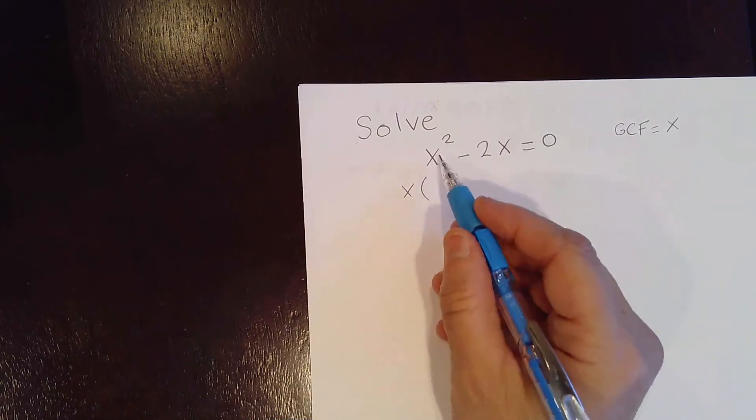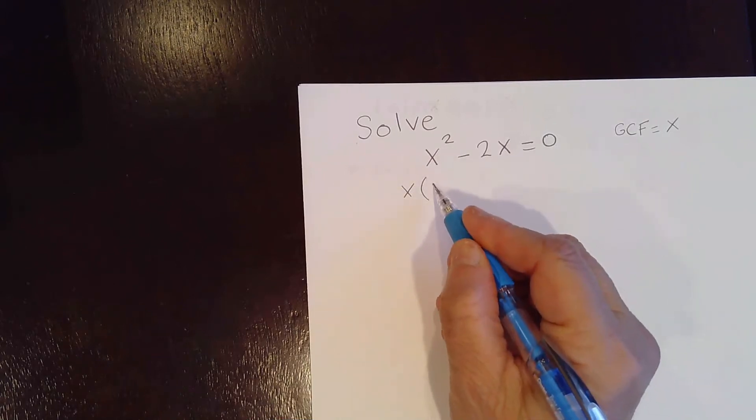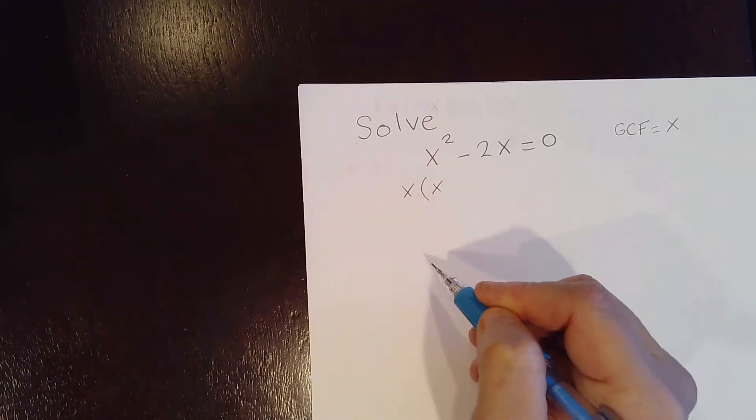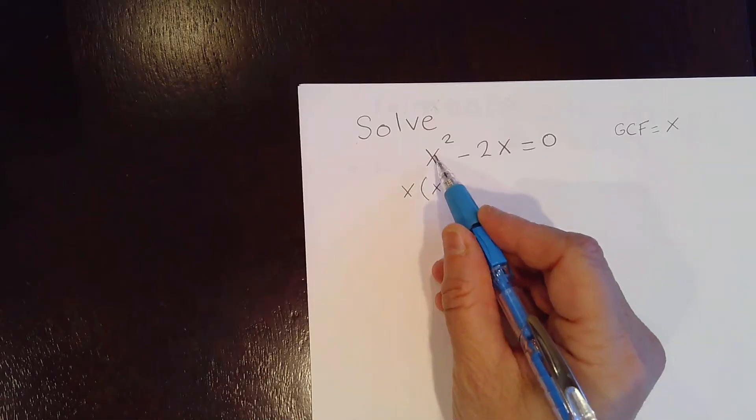If we factor x from the first term, you'll be left with x. If you notice, x times x gives me x squared, and that's what I want.